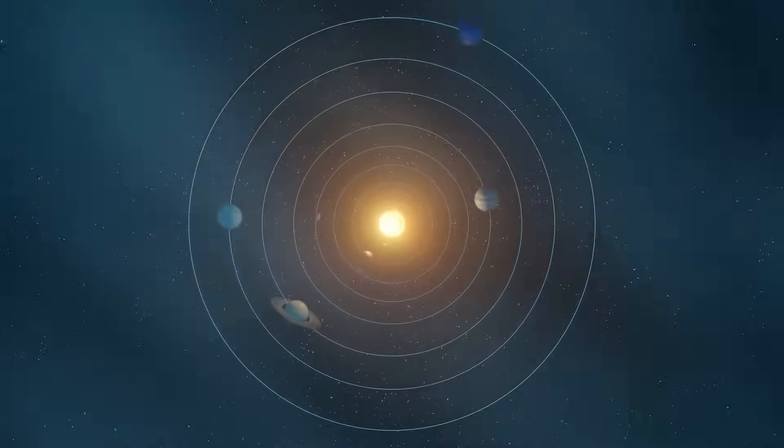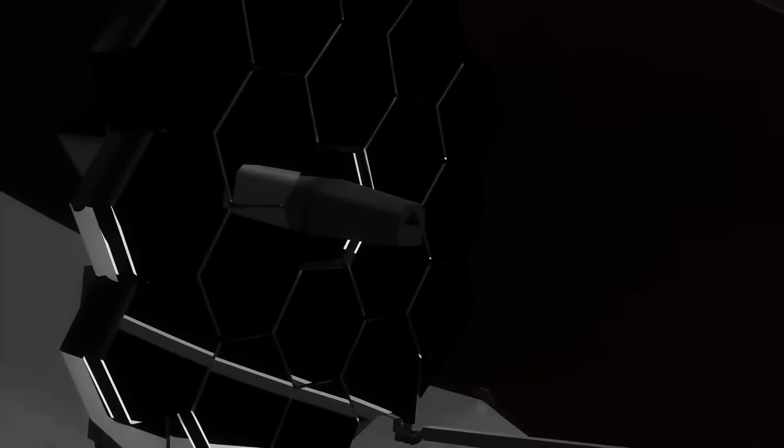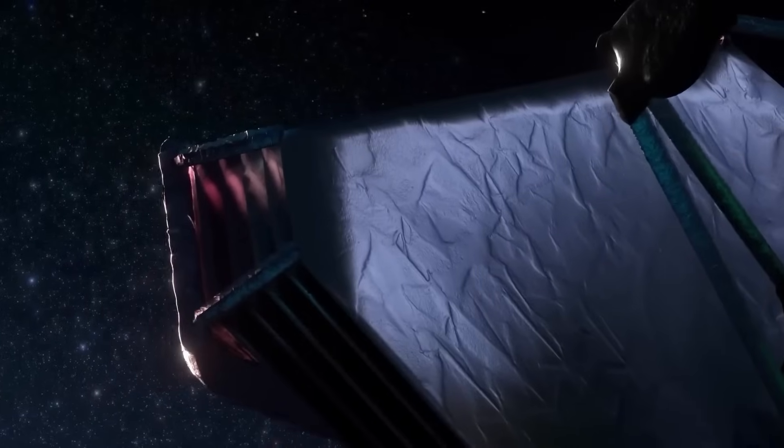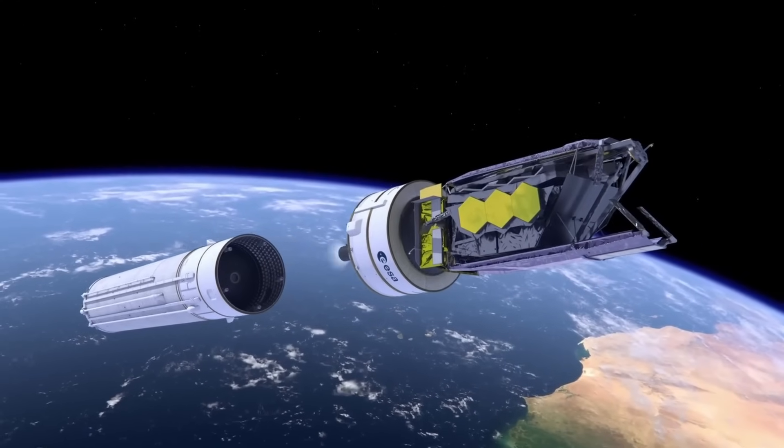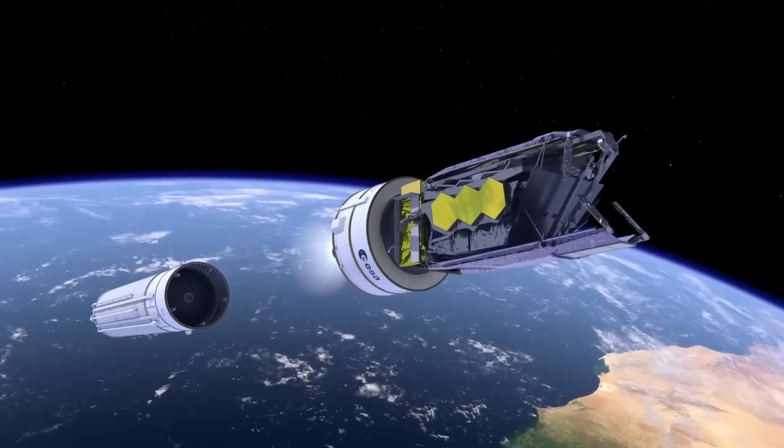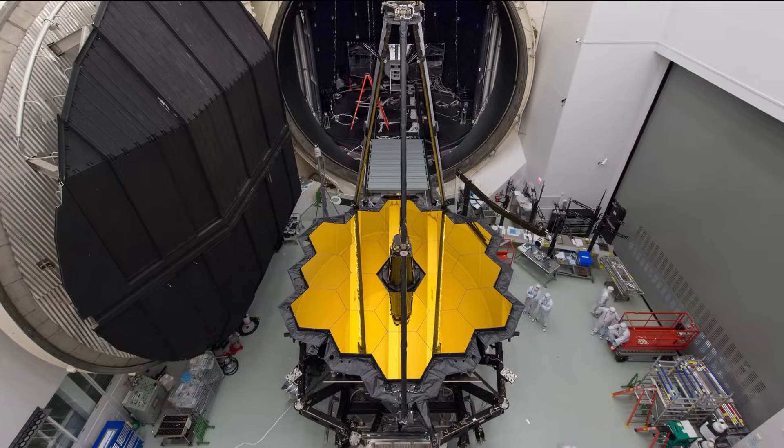Before we jump into the strange discovery, let's quickly understand what this telescope is. The James Webb Space Telescope is the most powerful space observatory ever built. It was launched by NASA on December 25, 2021. It took over a decade to build and cost nearly $10 billion.